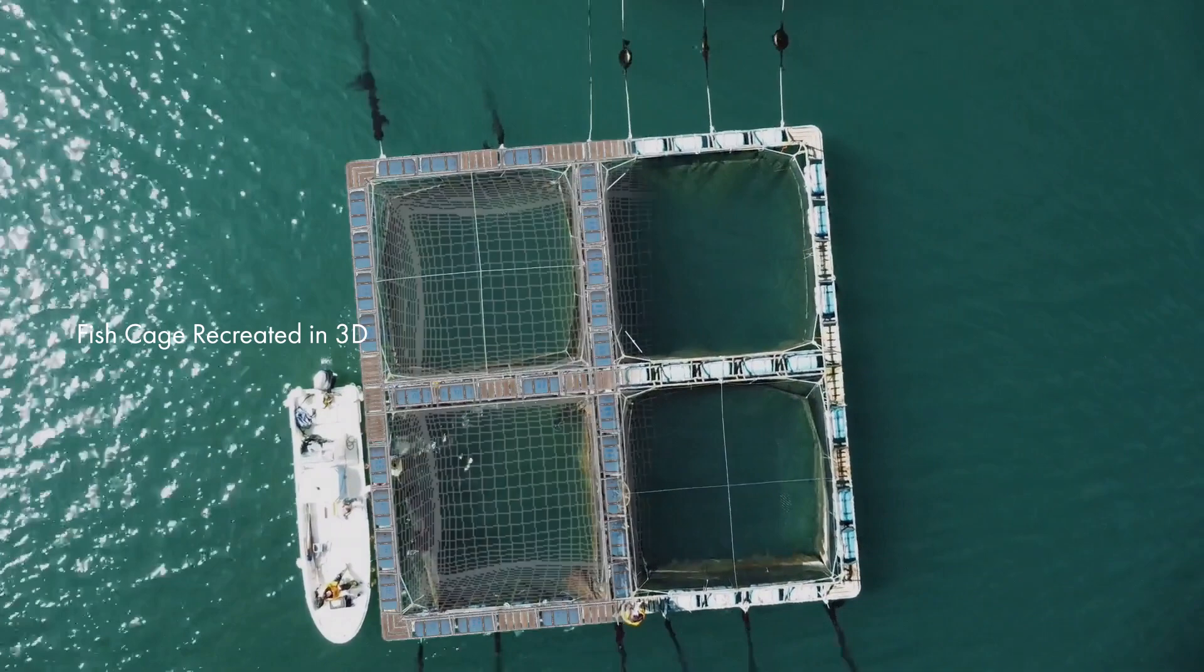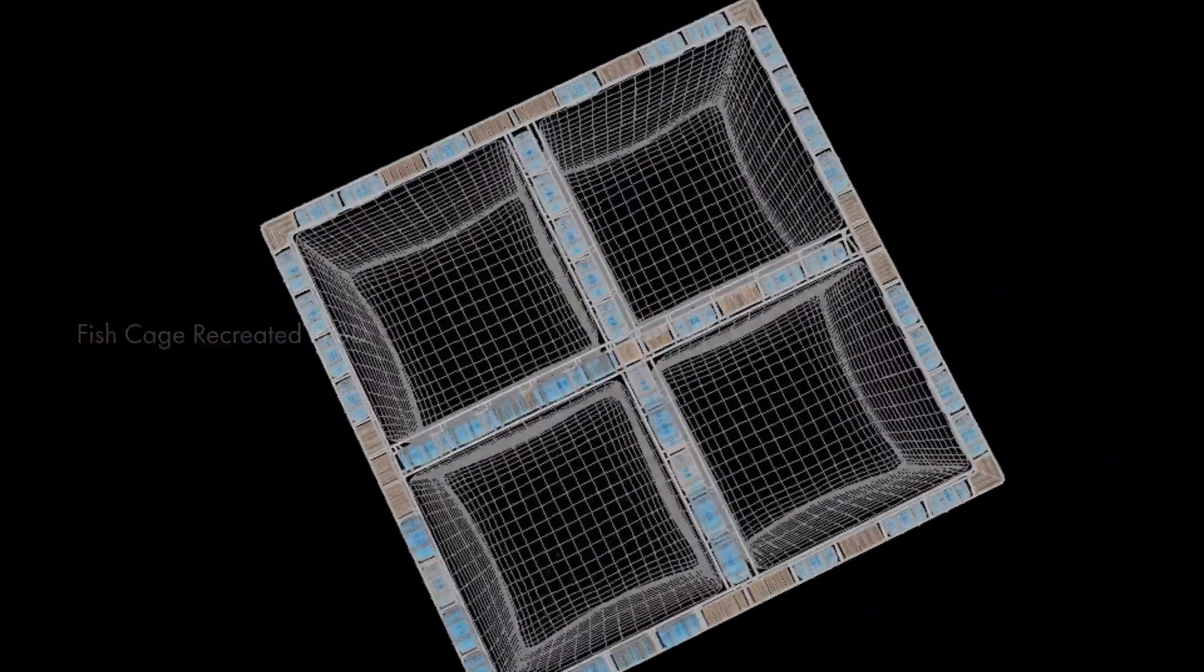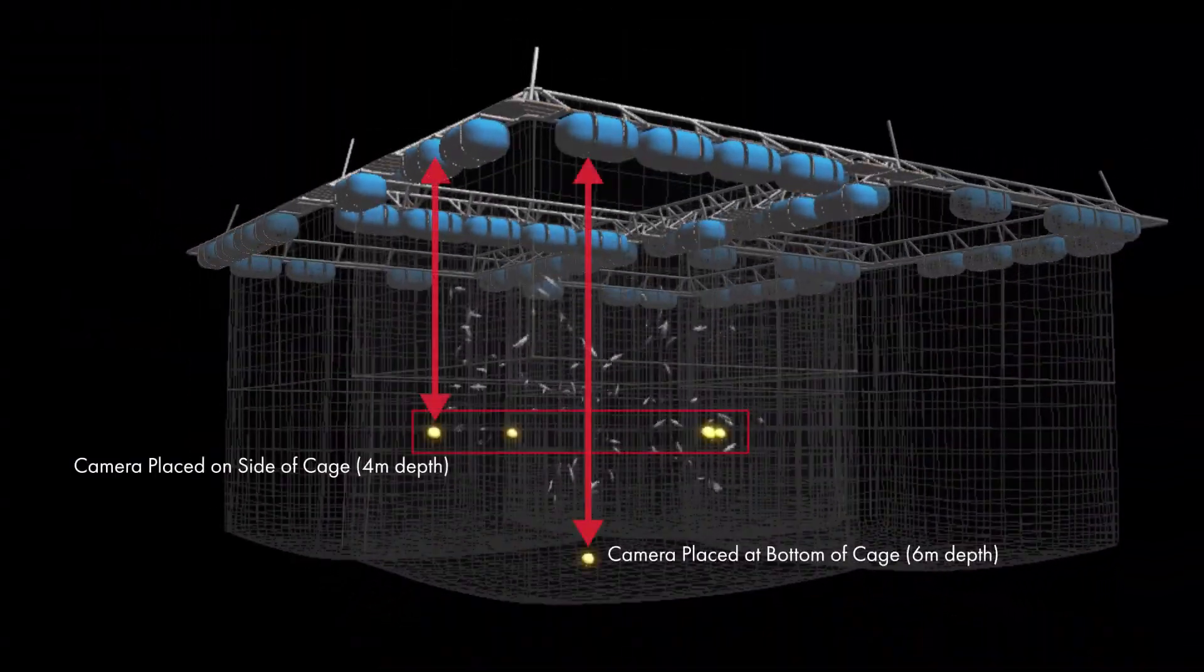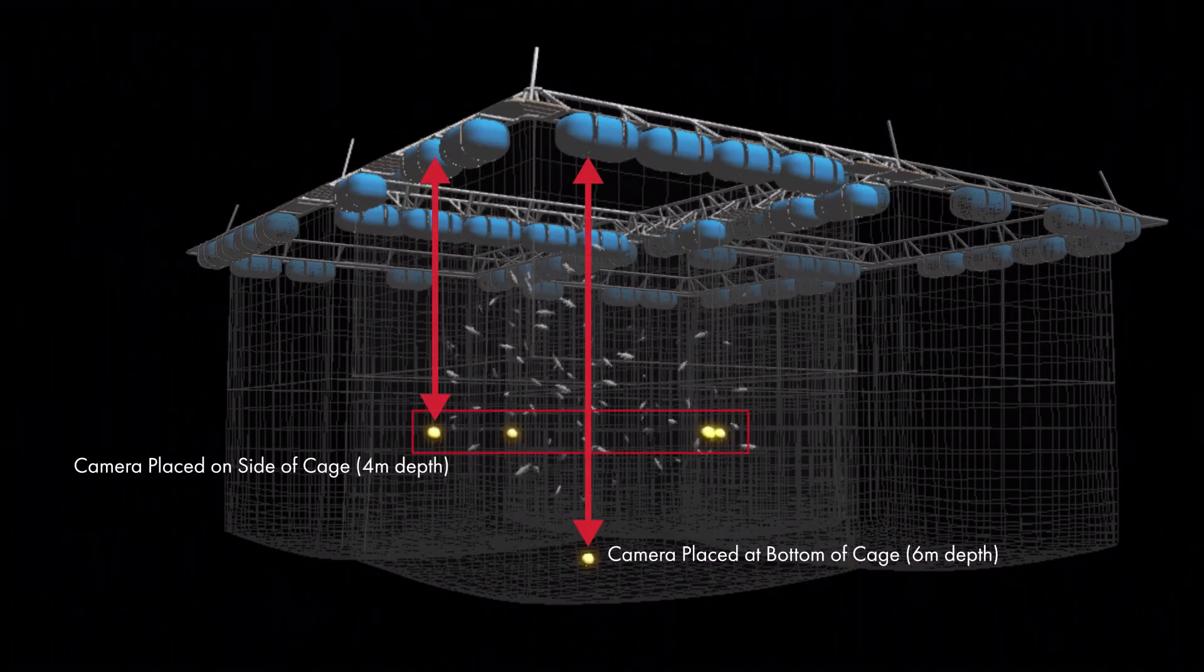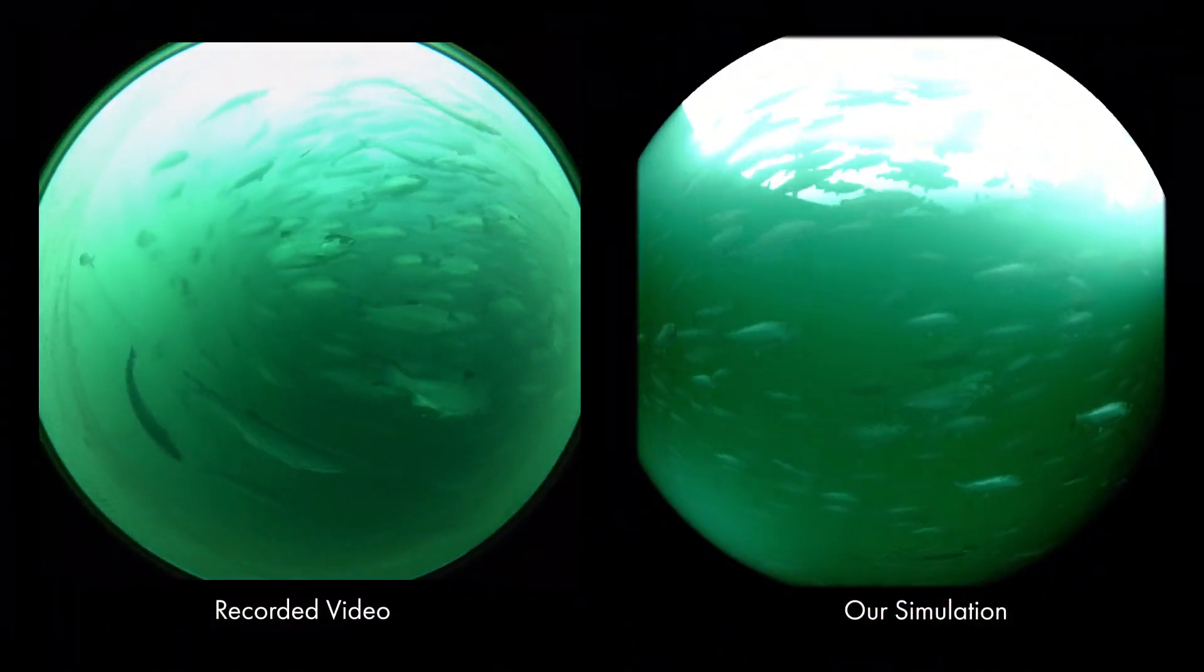We modeled the fish cage in 3D. We recorded footage from the edges of the cage at a depth of 4 meters and from the center of the cage at a depth of 6 meters. Here is the captured video and complete view of our simulation.